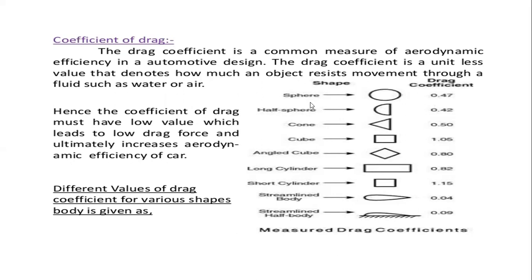From experiments, it has been proved that for a spherical body the coefficient of drag is 0.47; for a half sphere it is 0.42; for a cone surface it is 0.5. The data shows that a streamline body has the minimum coefficient of drag, which is 0.04. So basically all vehicles are designed with a minimum coefficient of drag in order to have the least drag force, hence designed in the shape of a streamline body.